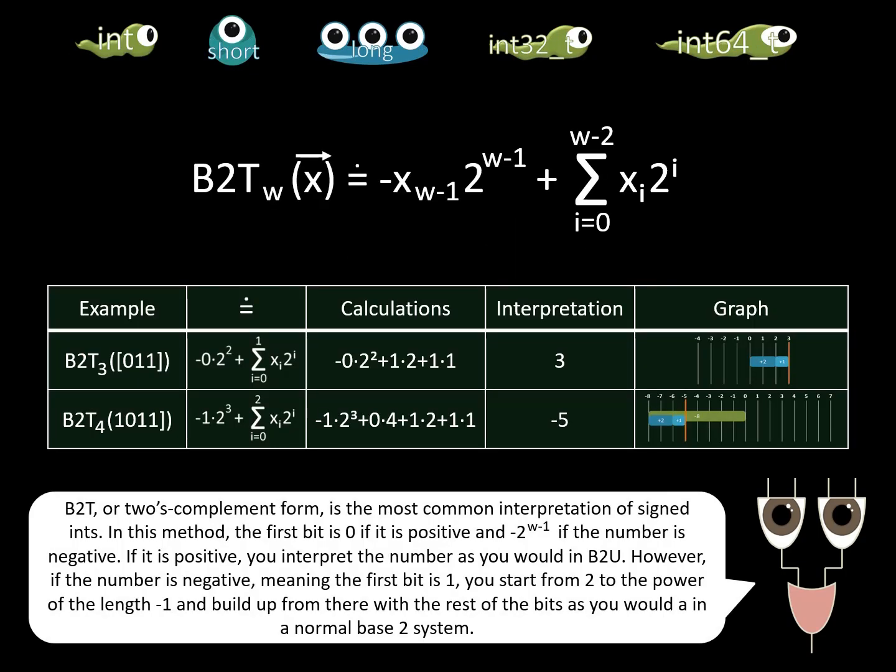B2T, or two's complement form, is the most common interpretation of signed ints. In this method, the first bit is 0 if it is positive, and negative 2 to the w minus 1 if the number is negative. If it is positive, you interpret the number as you would in B2U.